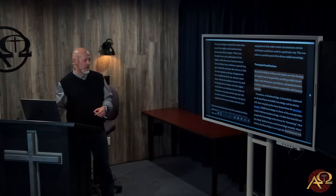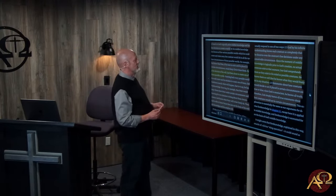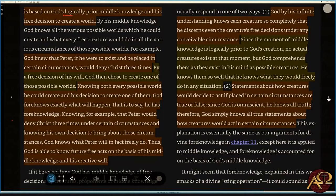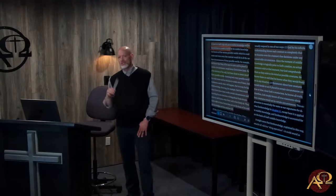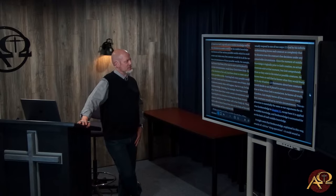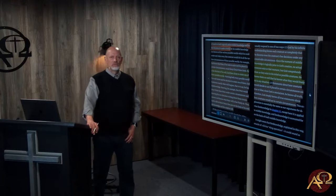Nonetheless, foreknowledge is not logically foundational, but is based on God's logically prior middle knowledge and his free decision to create a world. Now, please notice something. This is based on God's logically prior middle knowledge. So foreknowledge is free knowledge because it's based upon what God does in creation. I want you to see this, and his free decision to create a world. What is the range and content of God's free decision? Because the temptation is to look at that and go, see, God has a eudokia. He has a free decision to create a world.